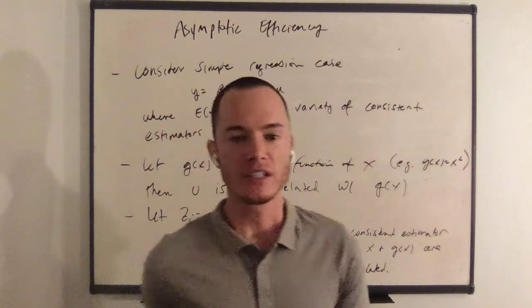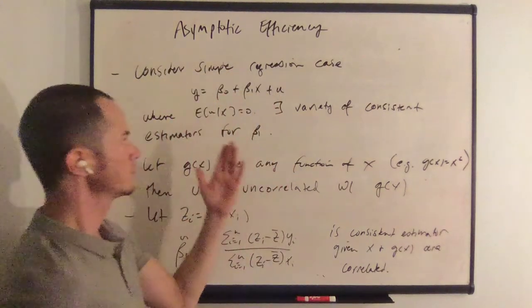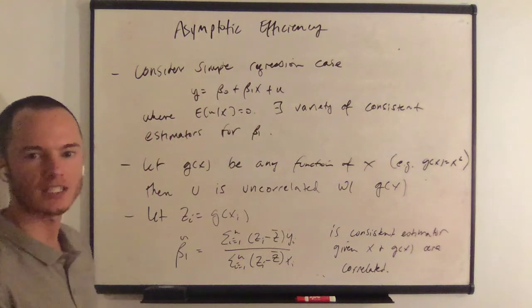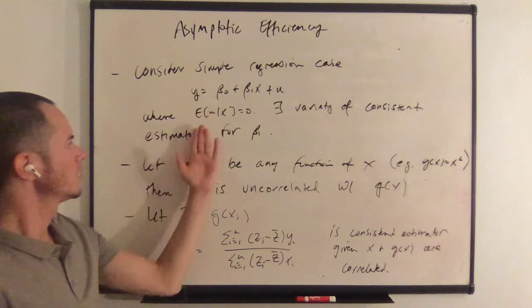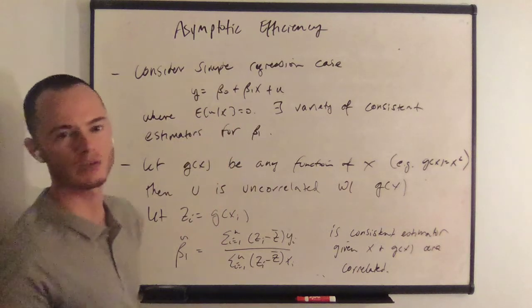Let's consider the simple regression case and show this. So the simple regression case is that y equals beta naught plus beta 1 times x plus u, where we have our zero conditional mean assumption, the expected value of u given x is equal to zero.